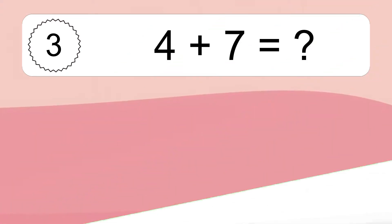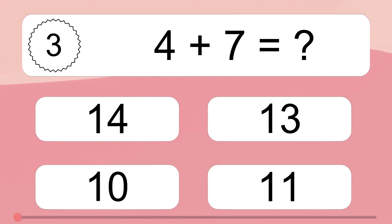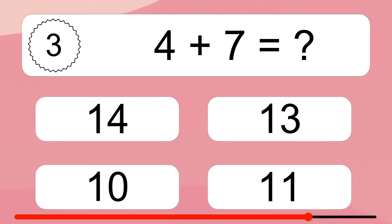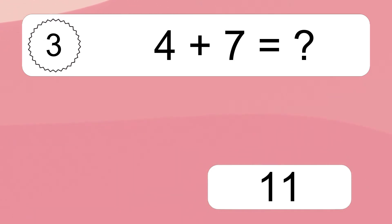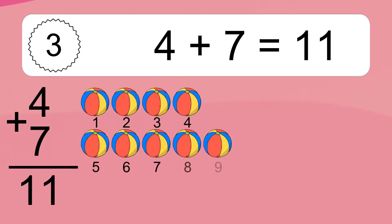4 plus 7 equals what? 4 plus 7 equals 11.